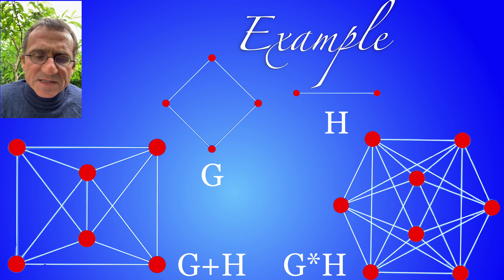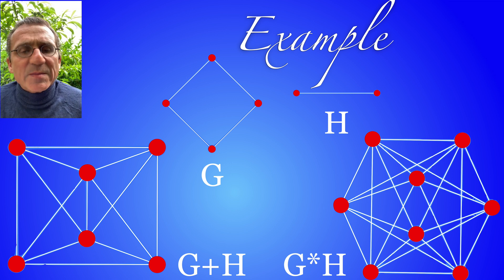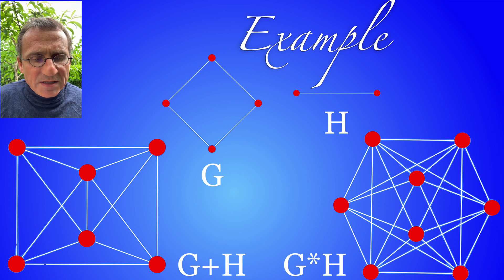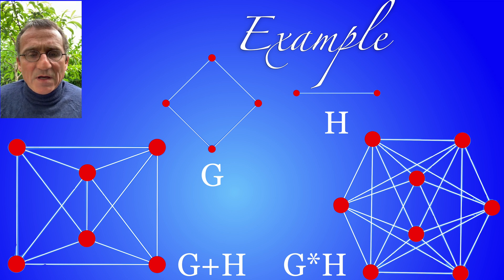Another example we take a cyclic graph and a complete graph with two elements and we see on the left kind of like an octahedron with a north and south pole connected and on the right it's a larger graph now with eight vertices.